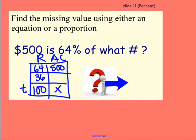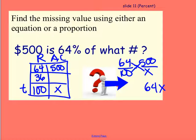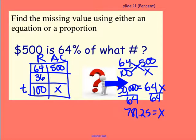Which means I can set up a proportion to say 64 out of 100 is equal to 500 over x. So I can cross-multiply and get 64x is equal to 50,000, and then I'm going to divide by 64. When I do that, I end up seeing that it's 781.25. That means that my entire thing was $781.25, and 64% of that is that $500.